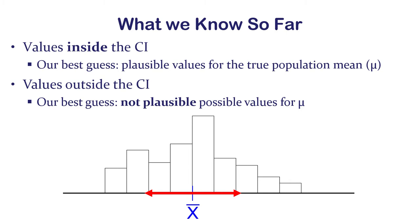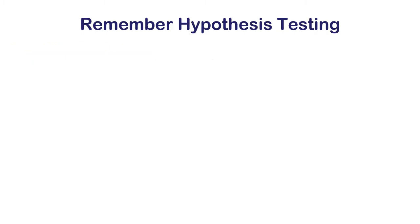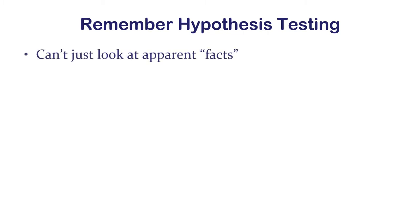Everything outside that limit — outside that red arrow — is not plausible as far as we know. It doesn't mean it's not there; it just means that based on our data our best estimate is that it's not believable. It's certainly not as believable that the mean could be outside this range, because we only have one sample and that's it.